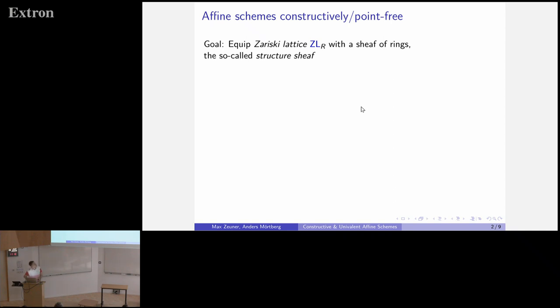I'm not going to talk about what sheaf is too much. Basically, the structure sheaf is this O, and it's a pre-sheaf going from ZL op into commutative rings. This is the main difference from a classical approach. Classically, we define a topology on the set of prime ideals of our ring R, and then the open sets form the Zariski lattice. Constructively, we look at finitely generated ideals of our ring, and then we quotient by this equality that two finitely generated ideals are equal if their radicals are equal.